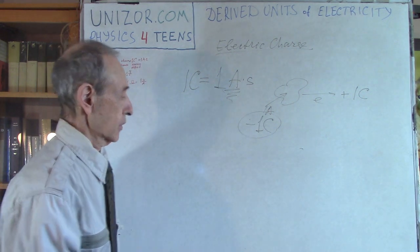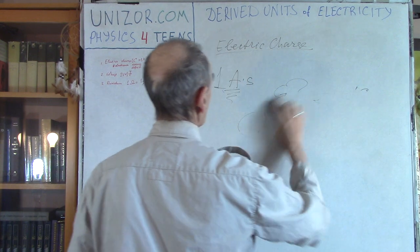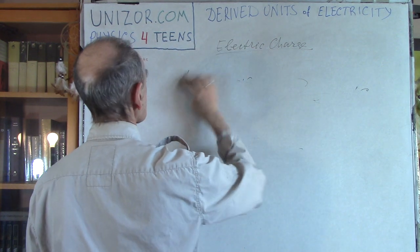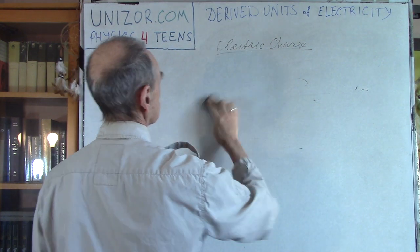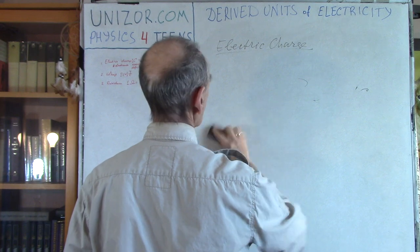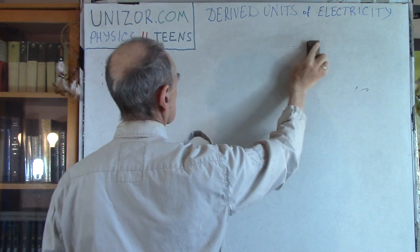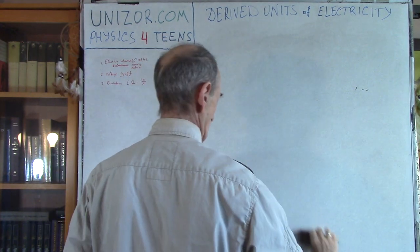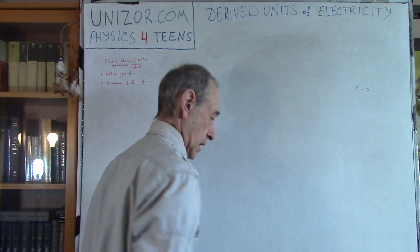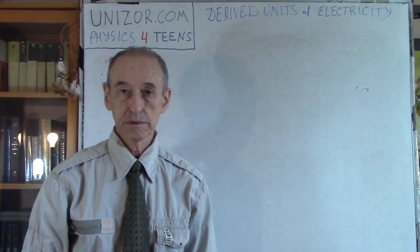So the unit of electric charge is the Coulomb. That's all about Coulombs and electric charge. Next is voltage — how can we define a volt?